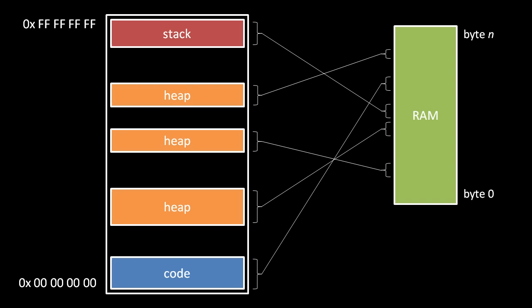Each page is usually a set size, which depends upon the CPU. 32-bit x86 processors, for example, usually use 4-kilobyte pages.